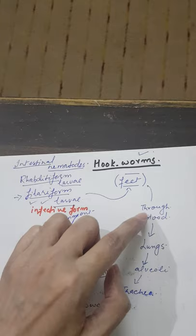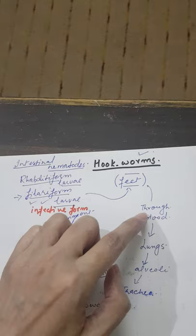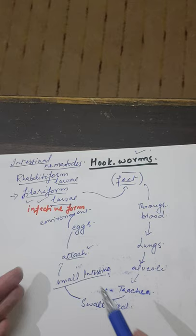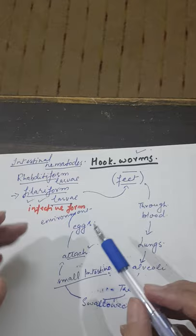To recap: filariform larvae enter through the feet, travel through the blood to reach the lungs, move through alveoli and trachea, are swallowed, and reach the small intestine. They attach there, release eggs, and eggs pass into the outside environment through feces.